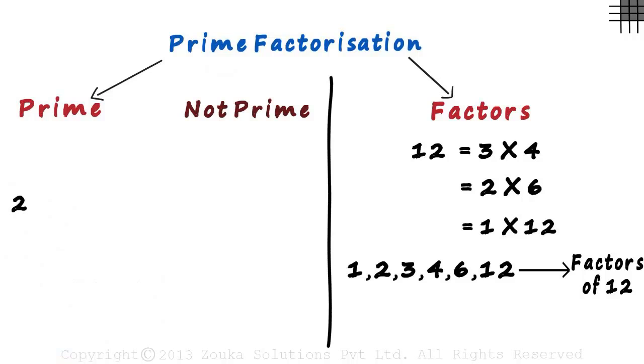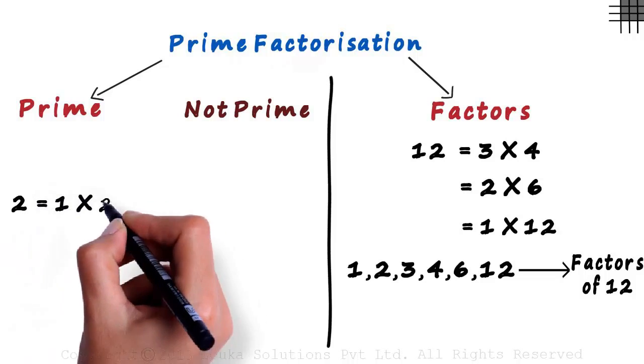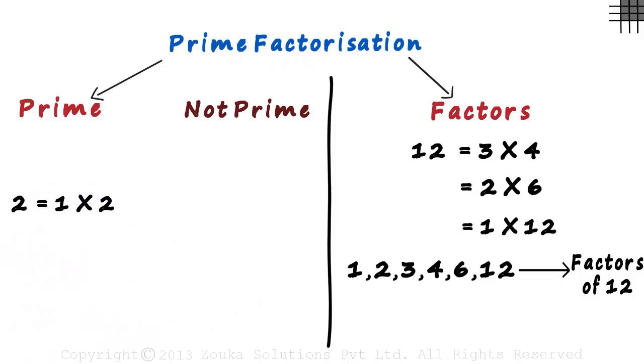Think of different ways in which 2 can be written as a product of two positive integers. There is only one way. It can be written as 1 multiplied by 2. Such numbers which have only two factors, 1 and itself, are called prime numbers. So we write a 2 here.